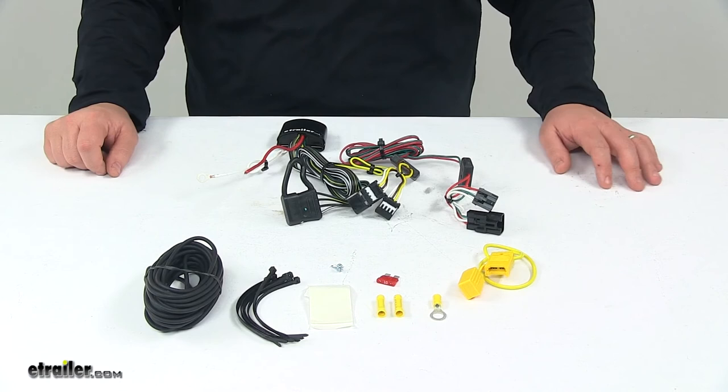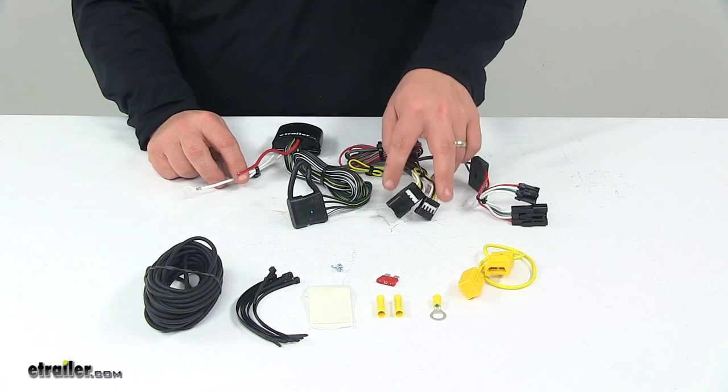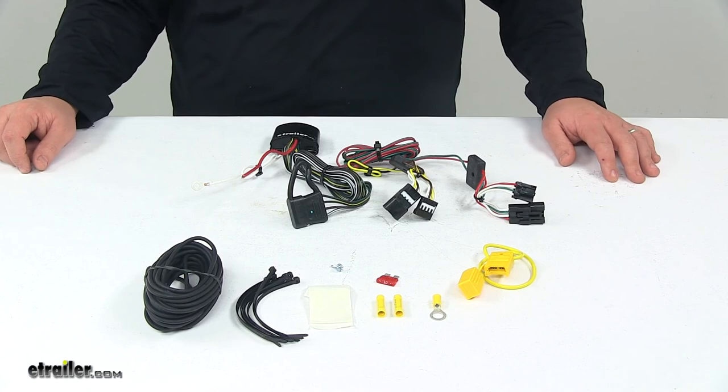When it comes to the maximum amperage for the stop and turn lights, we're looking at 2.1 amps per circuit, and for the tail lights, we're looking at 5.6 amps per circuit.